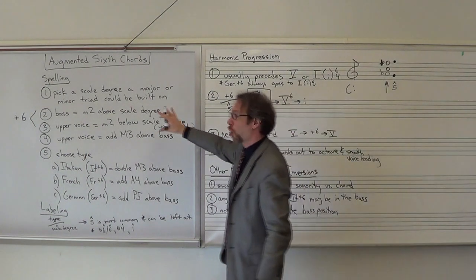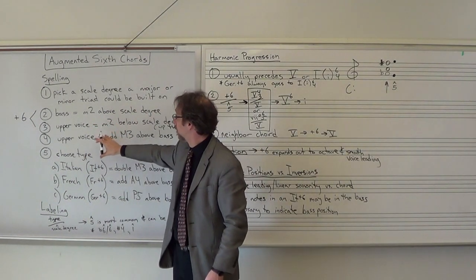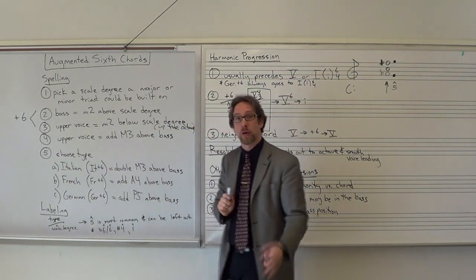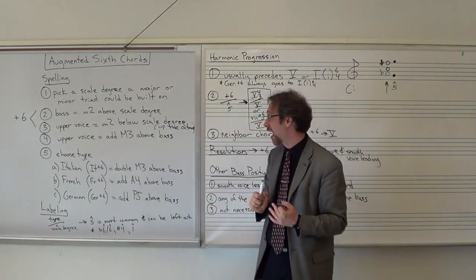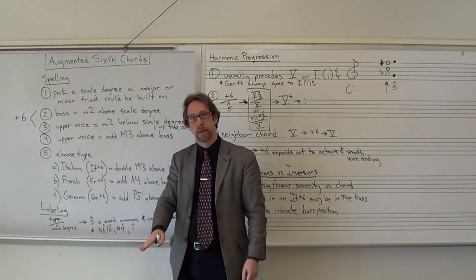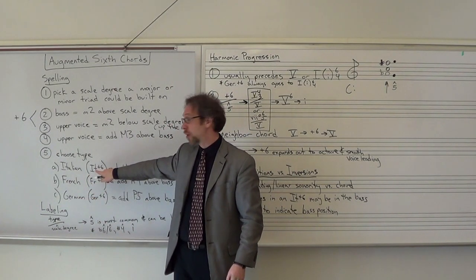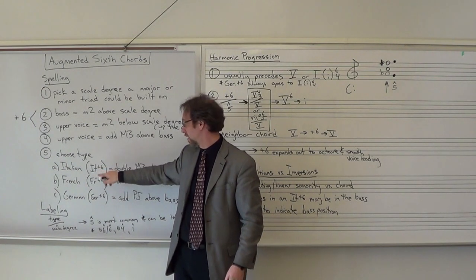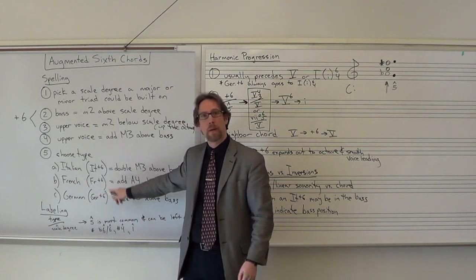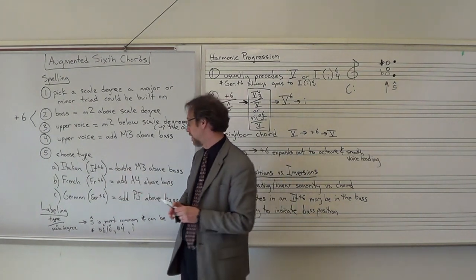After you've got your core of the augmented sixth chord, you have to choose the type of augmented sixth chord. There are three different types: Italian, French, and German. They have abbreviations used for Roman numerals — IT+6, FR+6, or GER+6 — that's what you will use for Roman numeral analysis.